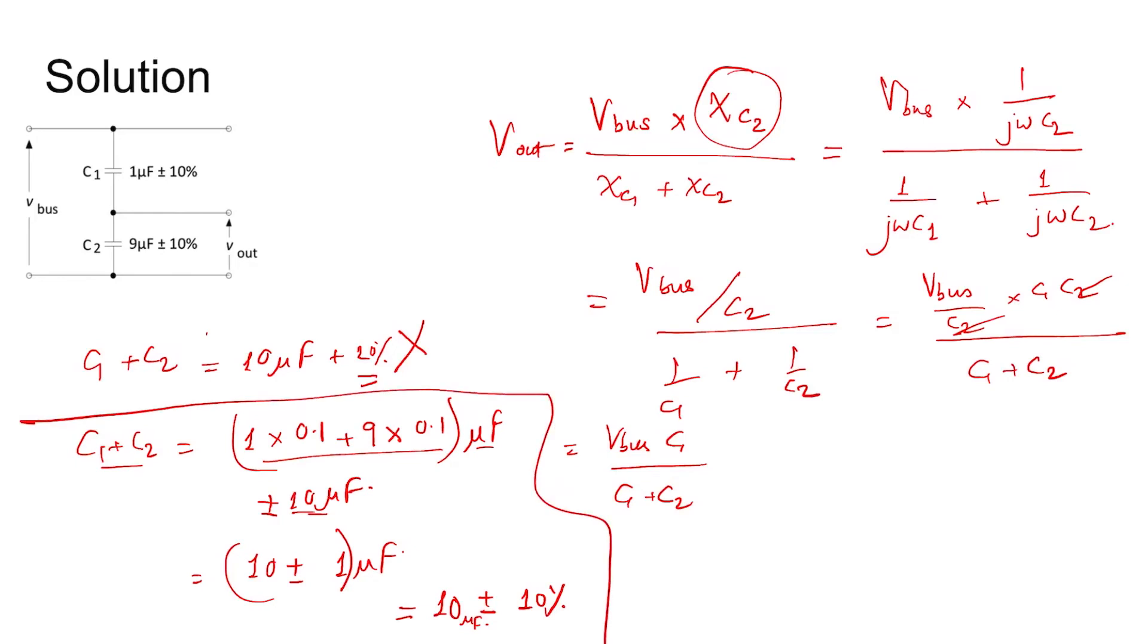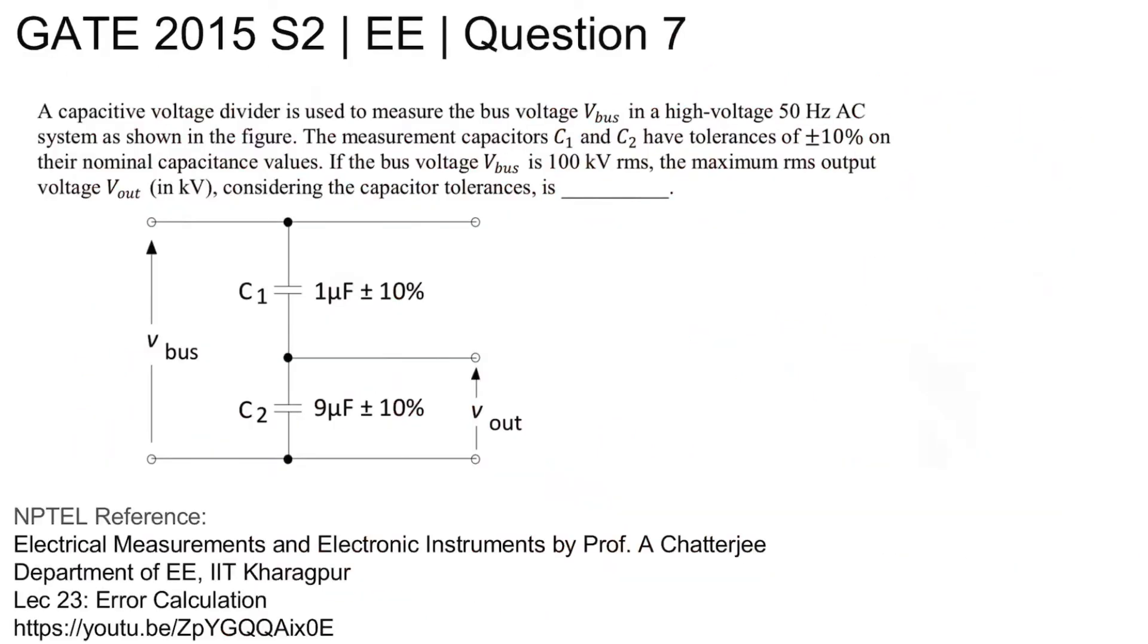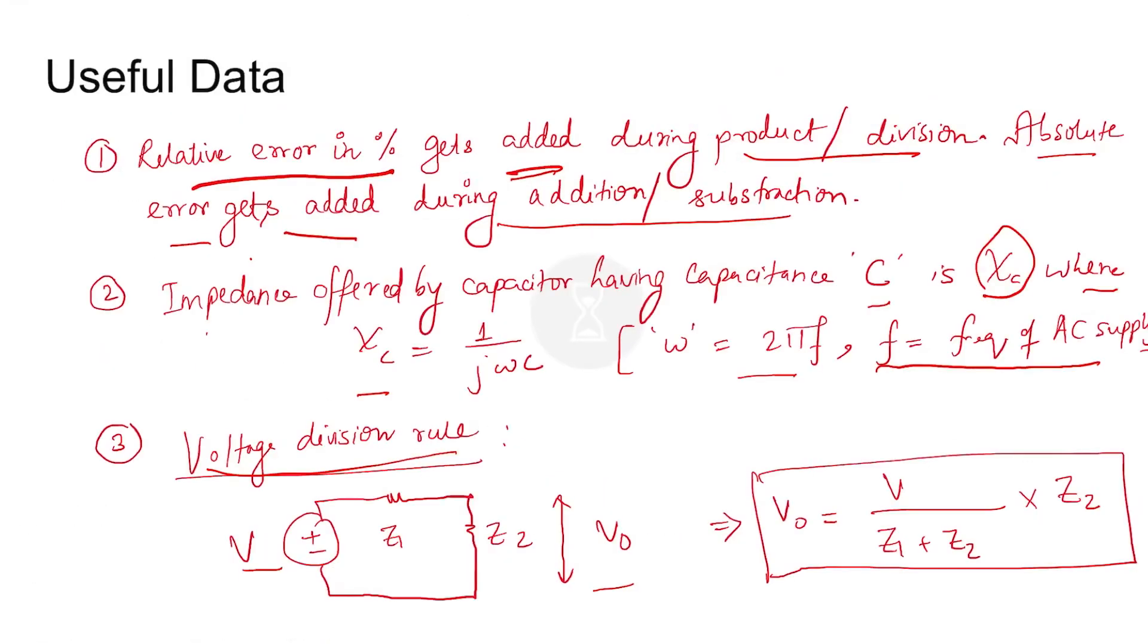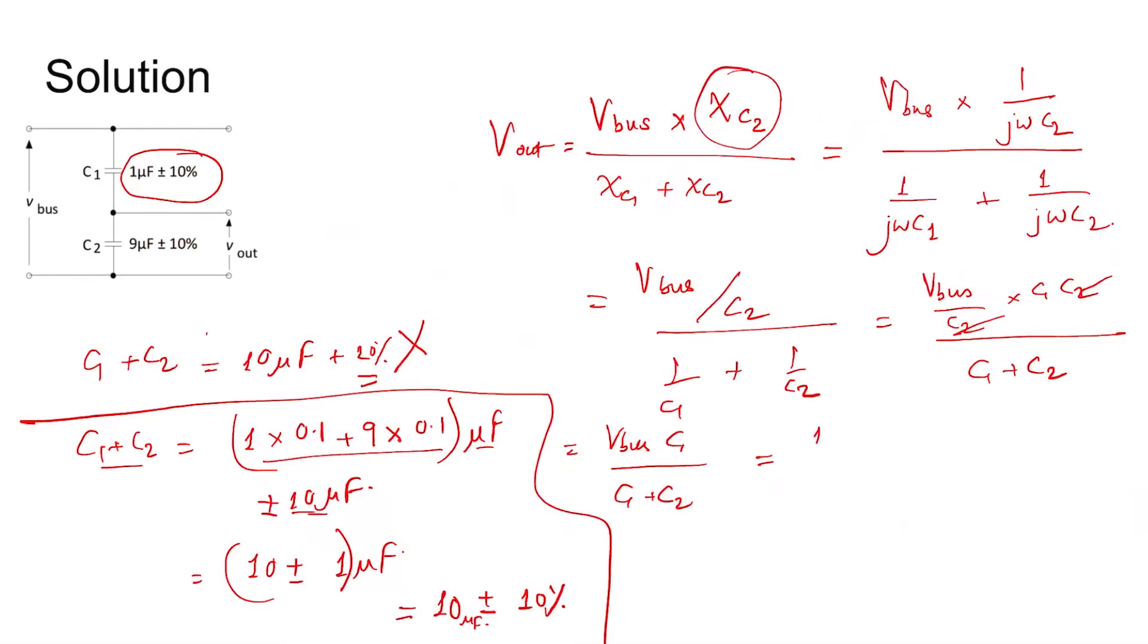And C1 individually has this error - 1 microfarad plus or minus 10 percent. So V_bus is mentioned in the question as 100 kV RMS. So 100 into 10 to the power 3 into C1 in microfarad divided by (C1 plus C2).